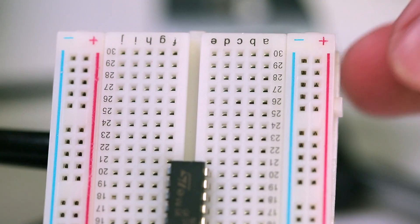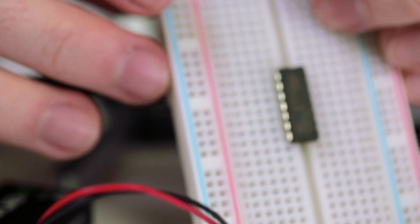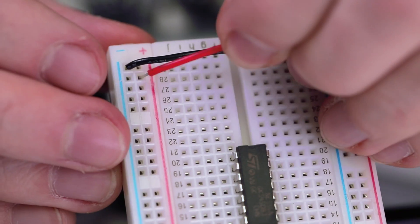This makes it much easier to distribute power and ground to all those components in the middle. Keep in mind that each outer column is separated from one another. In fact, they can be removed entirely. If we decide we also want power on the other side of the board, we'll need to use wires to jump those connections from one side to the other.